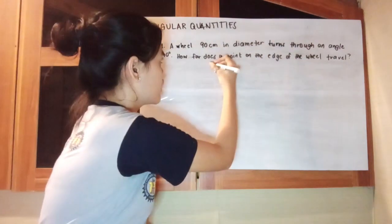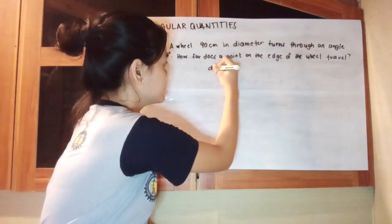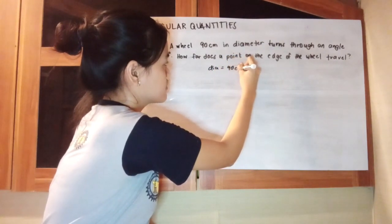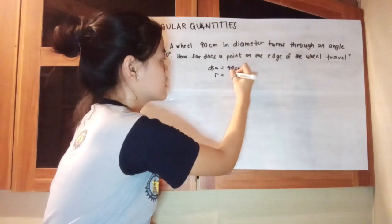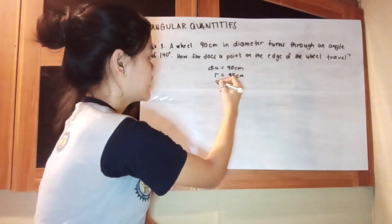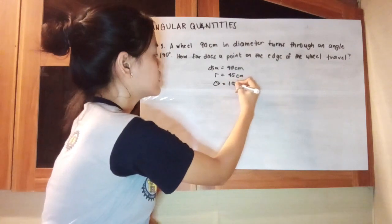In this problem, we have a given diameter which is equivalent to 90 cm. That means a radius is equivalent to 45 cm, and an angle of 190 degrees.